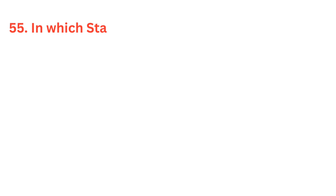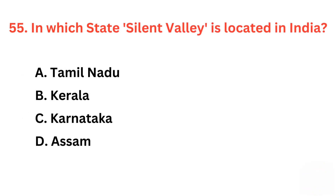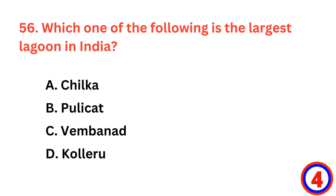In which state is Silent Valley located in India? The correct answer is option B, Kerala. Which one of the following is the largest lagoon in India? The correct answer is option A, Chilika Lagoon.